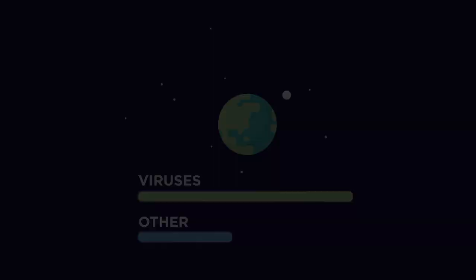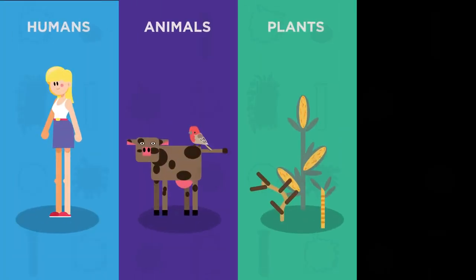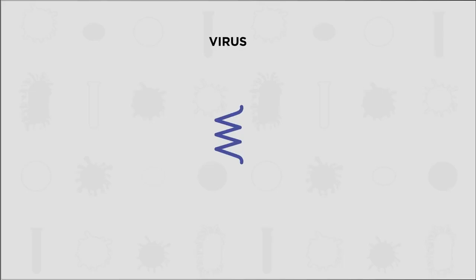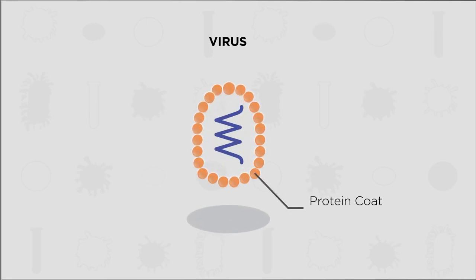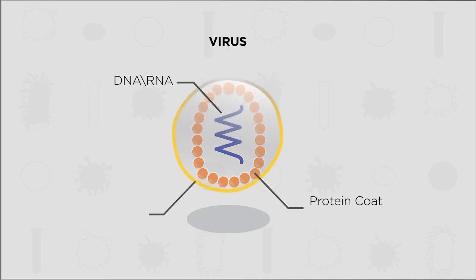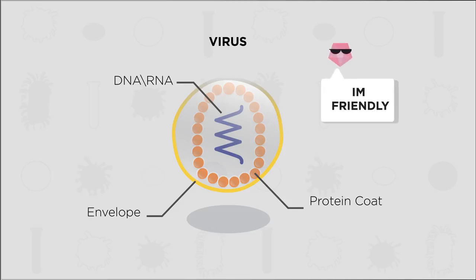Viruses can infect humans or animals, plants and even bacteria. Viruses are very simple. They are made up of a protein coat surrounding a strand of genetic material. The genetic material can either be DNA or RNA. Sometimes a membrane called an envelope surrounds a virus particle. This envelope isn't made by the virus, but is actually stolen from the membrane of the host cell. This is a great strategy by the virus — it makes it harder for the host cell to identify the virus as foreign.